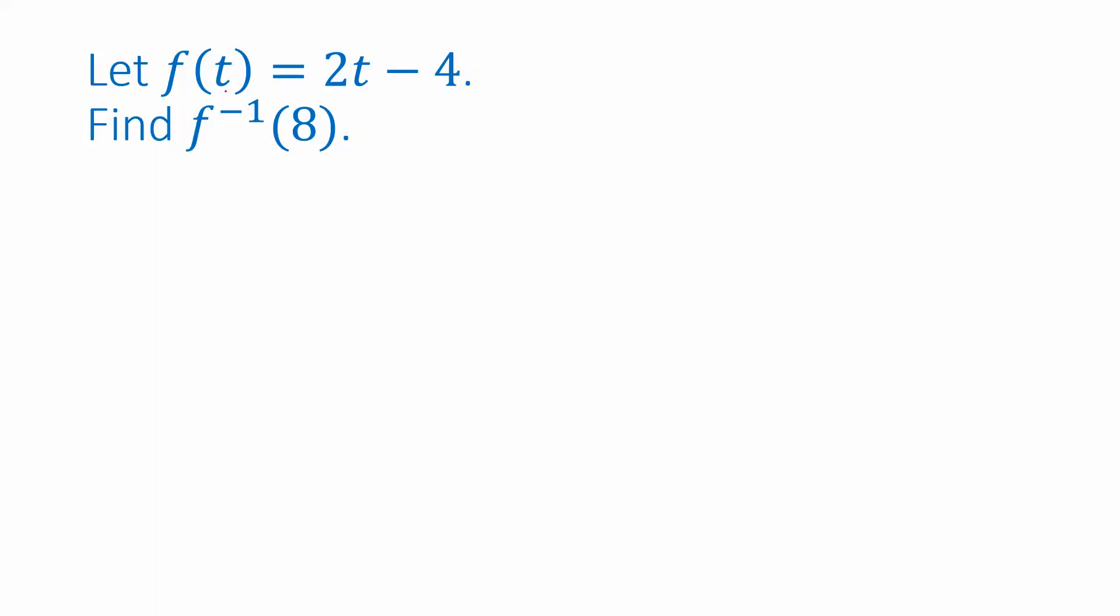I'm going to be plugging in some t value. Whatever I plug in for t is going to end up being computed with this expression 2t minus 4 to get the output. And I want that output to be 8. Well this is just an equation I can solve to figure out the value for t. If I add 4 to both sides I get 2t equals 12. And then if I divide both sides by 2 I get t equals 6.